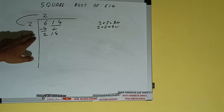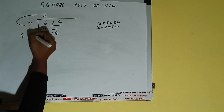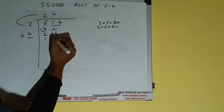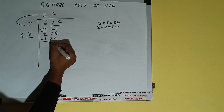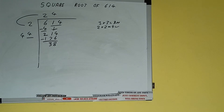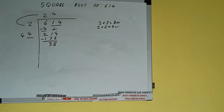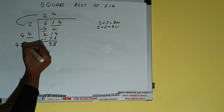Now whatever number we write here we have to write here also. So if we write 4 here and 4 here it will be 176; subtract — 38 will be left. Now 44 into 4 we did, so add both: 44 plus 4 will be 48. So write it here.